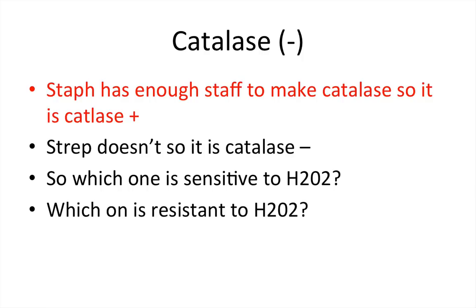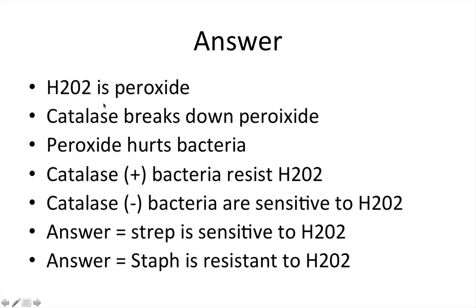Strep is catalase negative, and again the mnemonic is that staph has enough staph to make catalase, so staph is catalase positive and strep is not. A question: which bug is sensitive to H2O2 and which is resistant? H2O2 is peroxide. Catalase breaks down peroxide, and bacteria don't like peroxide. A catalase positive bacterium resists H2O2, while a catalase negative one is sensitive. So strep is sensitive to H2O2 and staph is resistant.